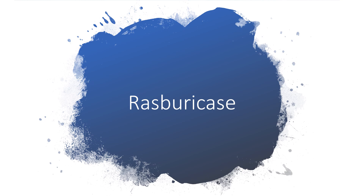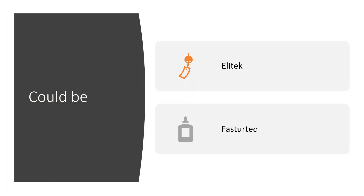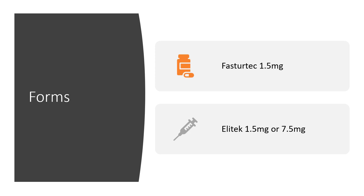With that in mind, let's go. Rasburicase is an enzyme, a recombinant urate oxidase. It could be known as Elitek or Fasturtec, depending on the available brand in your jurisdiction. It could appear in the form of Fasturtec 1.5 milligram, or Elitek 1.5 milligram or 7.5 milligram.